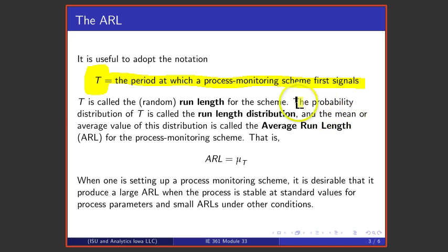The probability distribution associated with T is called a run length distribution. And the mean value of that distribution is called, cleverly enough, an average run length. It is an average value of T, its expected value. We'll write here ARL is mu sub T, or we could just as well write ARL is capital E of T.